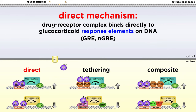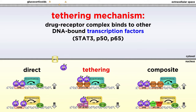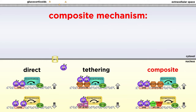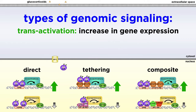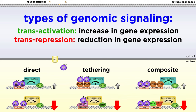The direct mechanism utilizes glucocorticoid response elements, where the drug-receptor complex specifically binds to these response elements on DNA. With the tethering mechanism, the drug-receptor complex binds to other DNA-bound transcription factors. The composite mechanism can be conceptualized as a mix of the direct and tethering mechanisms: the drug-receptor complex binds to glucocorticoid response elements which can subsequently bind to other transcription factors that are in turn bound to their respective response elements. Glucocorticoids can increase the expression of certain genes, known as transactivation, or reduce the expression of genes, known as transrepression.